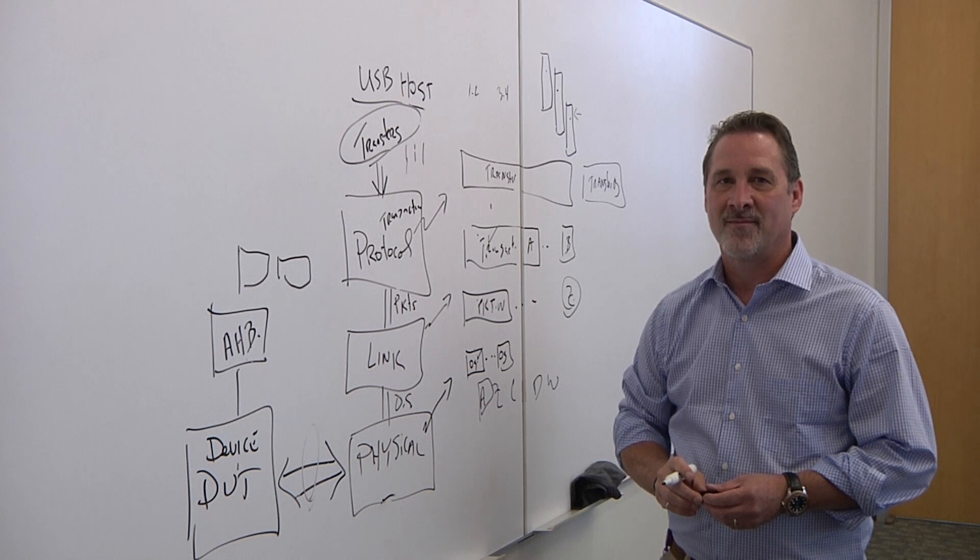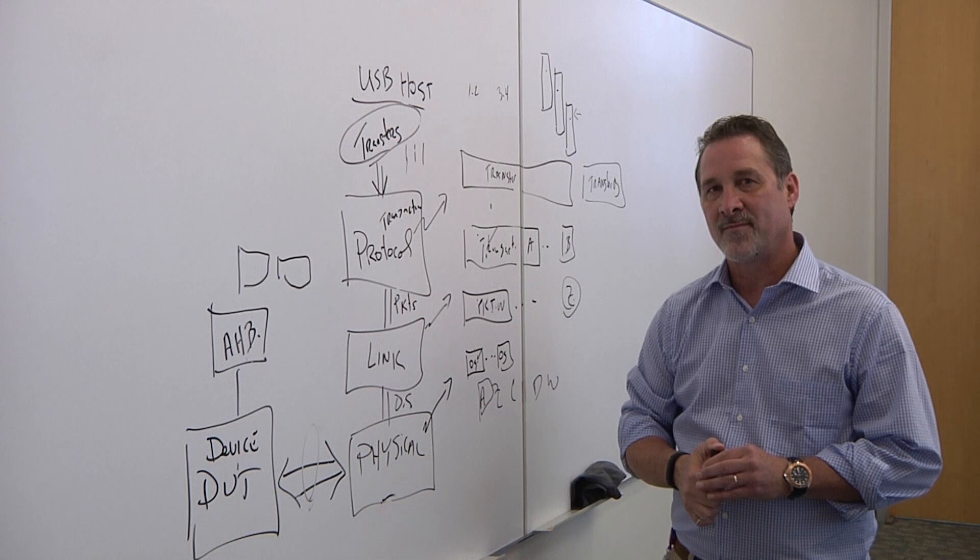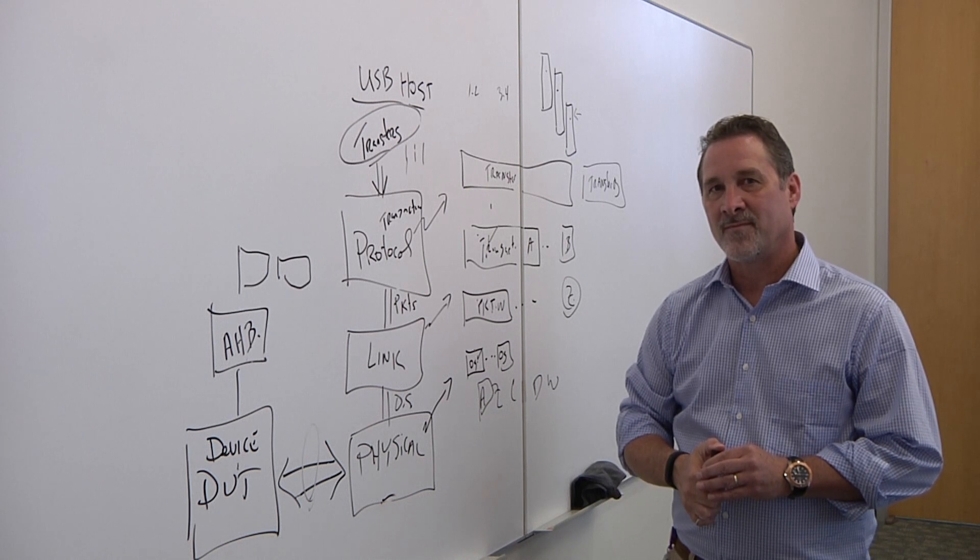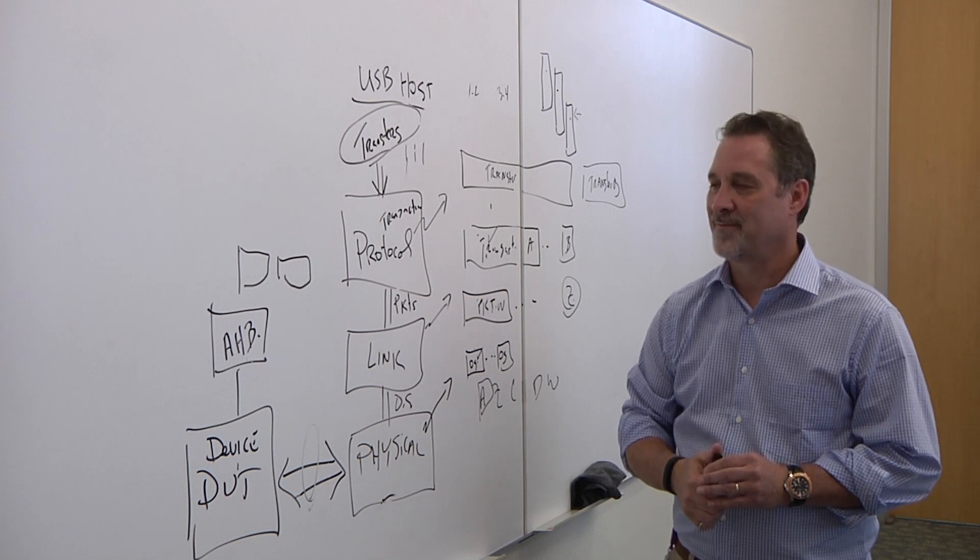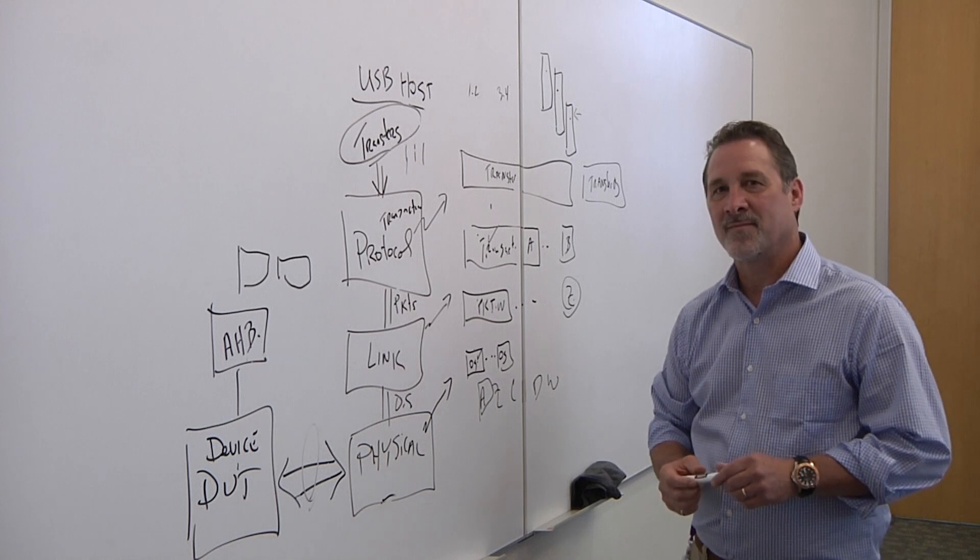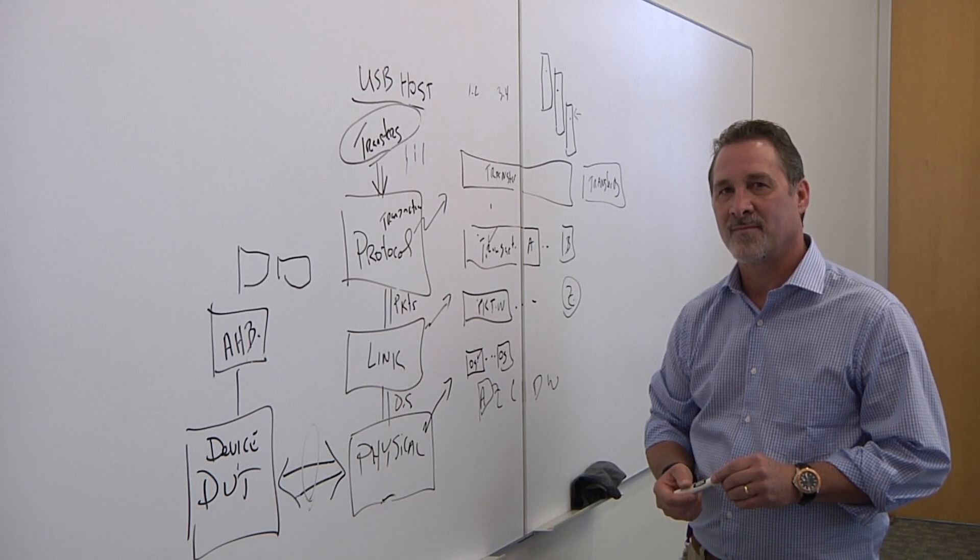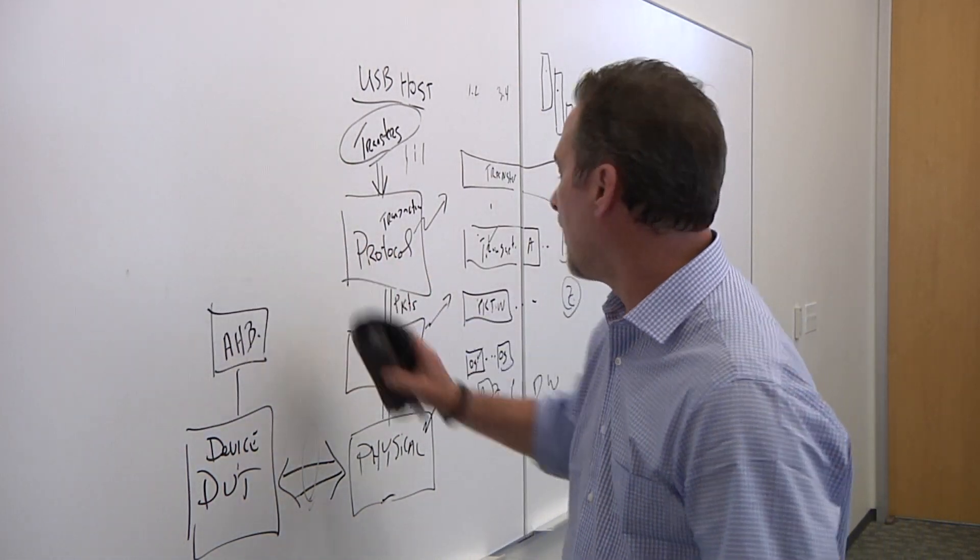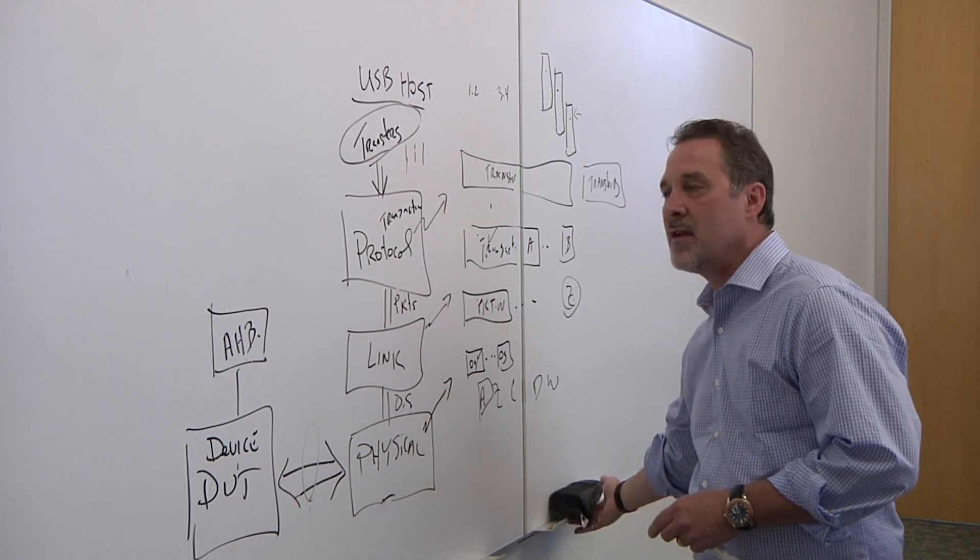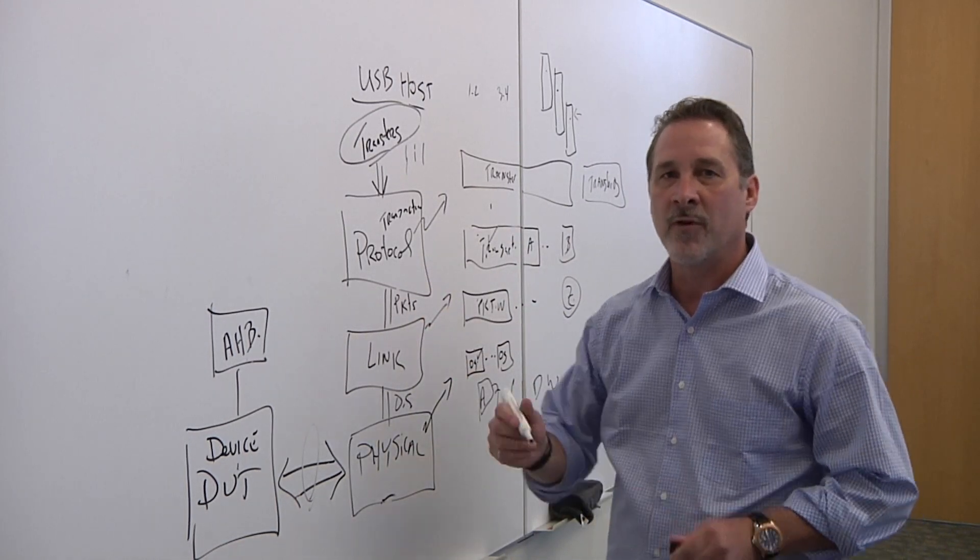USB is a fairly well-defined protocol. It's been well-characterized. Everybody understands what goes next to it, what causes problems. But as you start getting into very complex chips, that's not necessarily the case, particularly when you start dealing with out-of-order transactions, things that could be affected from a memory that's in contention from something else. How do you deal with that in debug?